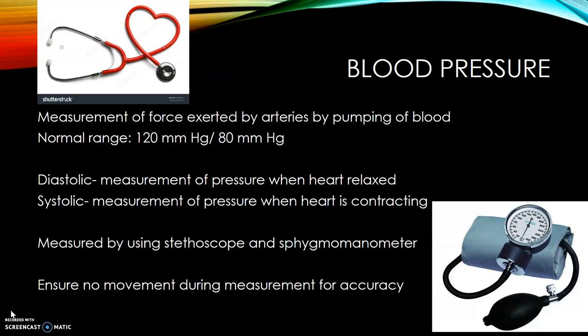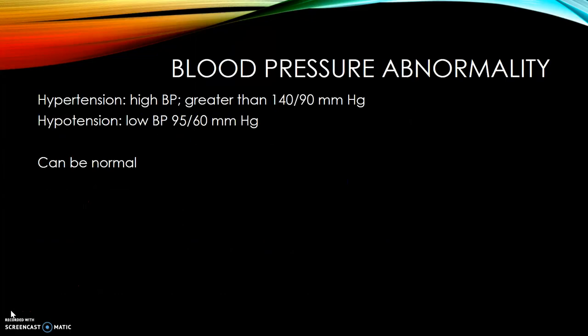Blood pressure is a measurement of the force exerted by the arteries by pumping blood. The normal range is 120 over 80. The diastolic is the measurement of pressure when the heart is relaxed, and the systolic is the measurement of pressure when the heart is contracting. It's measured using a stethoscope and a sphygmomanometer. Be sure the patient does not move during measurement for greatest accuracy. Blood pressure abnormalities include hypertension, which is high blood pressure or greater than 140 over 90, and hypotension, which is low blood pressure at about 95 over 60 or lower. Low blood pressure can actually be normal for some patients.